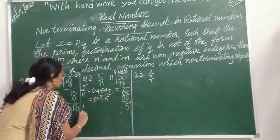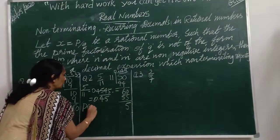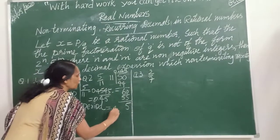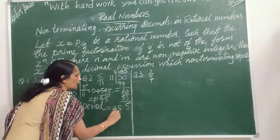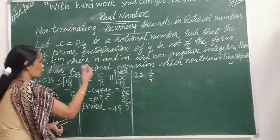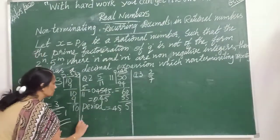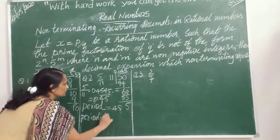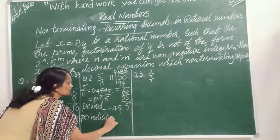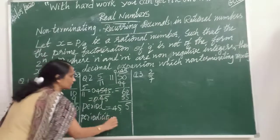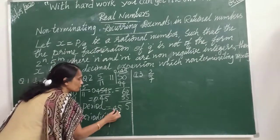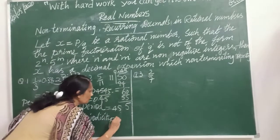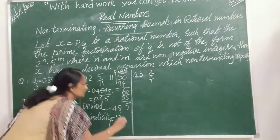So what is the period? The period, or the block, is equal to 45 — that means 4 and 5 are repeating. And what is the periodicity? Periodicity means how many digits are repeating. 4 and 5 are repeating — that is 2 digits. So the periodicity is 2.